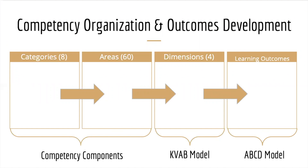Competencies are organized into eight different categories, and within those eight categories there are 60 areas. Moving in progressive order, you choose your student leadership competency category, then choose the area within that category — those are parts one and two of your competency components. Next, you discuss the four dimensions of that specific area using the KVAB model, and finally utilize the ABCD model to create the specific learning outcome.